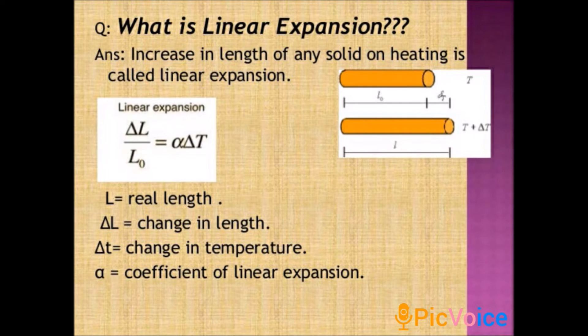In equation form, we write: delta L divided by L₀ equals the coefficient of linear expansion into delta T. Here, L₀ is the initial length — the original length — and delta L is the change in length. Delta T is the change in temperature, that is final temperature minus initial temperature. So: delta L by L₀ equals coefficient of linear expansion into change in temperature.